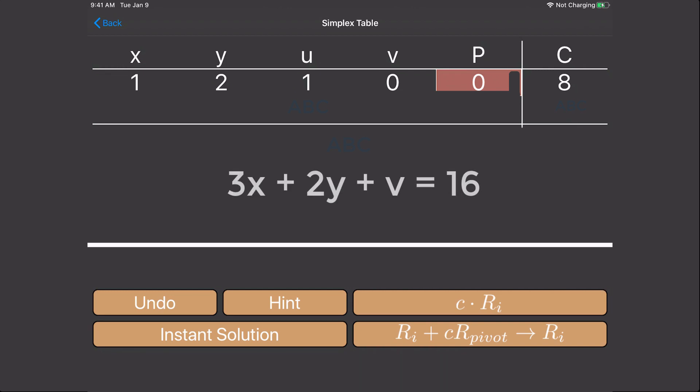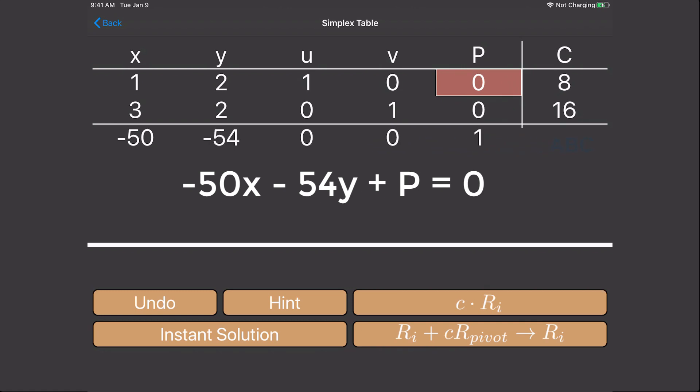The second is 3x plus 2y plus v equals 16. The coefficients are 3, 2, 0, 1, 0, 16. The bottom section of the table is for the objective function, negative 50x minus 54y plus p equals 0. The coefficients are negative 50, negative 54, 0, 0, 1, and 0.